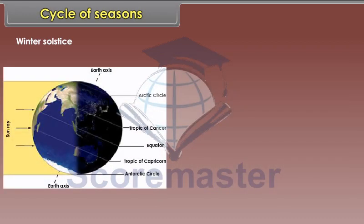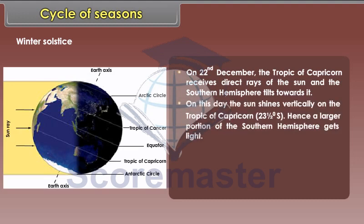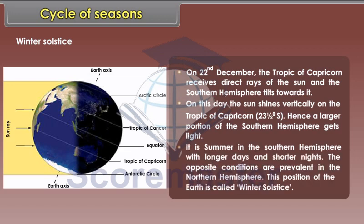Winter Solstice. On 22nd December, the Tropic of Capricorn receives direct rays of the sun and the Southern Hemisphere tilts towards it. The sun shines vertically on the Tropic of Capricorn at 23.5 degrees south. Hence, a larger portion of the Southern Hemisphere gets light. It is summer in the Southern Hemisphere with longer days and shorter nights. The opposite conditions are prevalent in the Northern Hemisphere. This position of the earth is called Winter Solstice.